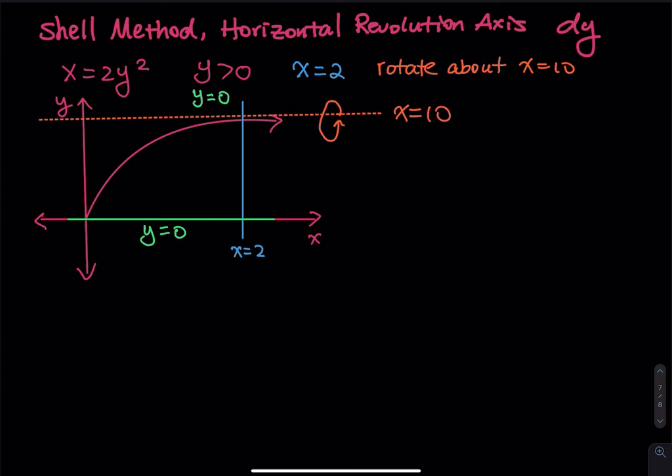So y equals 0, x equals 2. We have a region bounded by those curves and lines. And then I want to make a rotation about x equals 10. And x equals 10 is horizontal. So that's why this will be a dy integral.